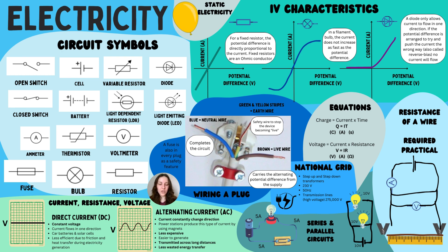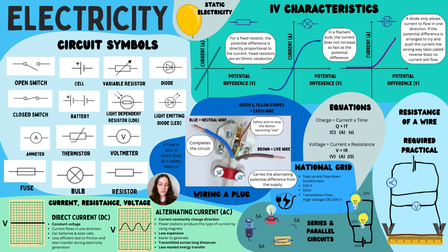There are two types of current. Direct current (DC) has a constant voltage and flows in one direction — car batteries and solar cells are examples. It is less efficient due to friction and heat transfer during electricity generation, so it's not used for the national grid. Alternating current (AC) has current constantly changing direction. Power stations produce AC using magnets. It's less expensive, easier to generate, and can be transmitted across long distances so less energy is wasted.